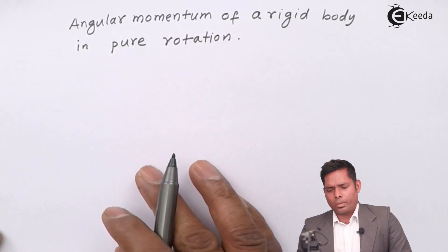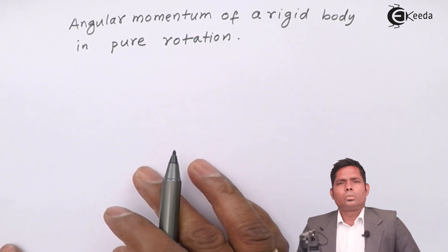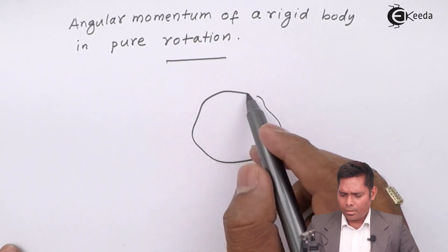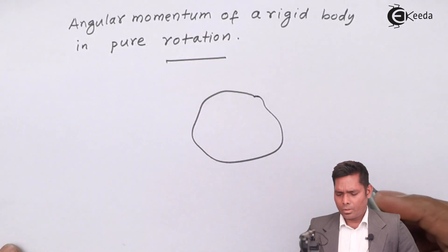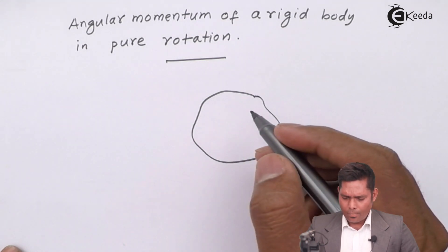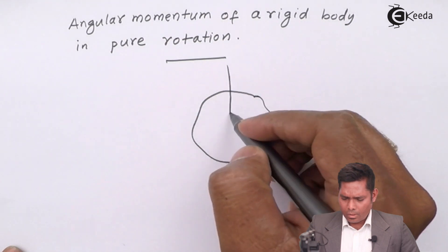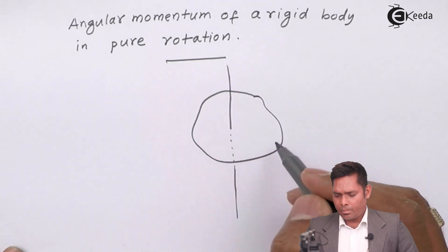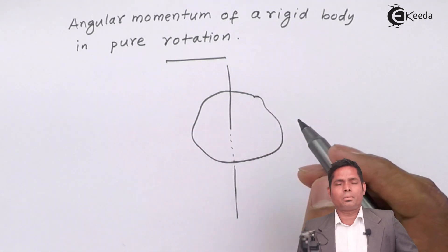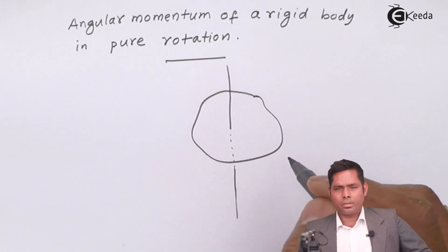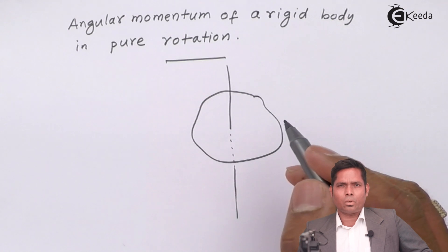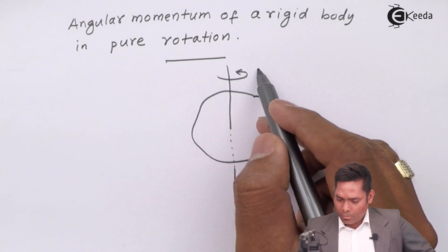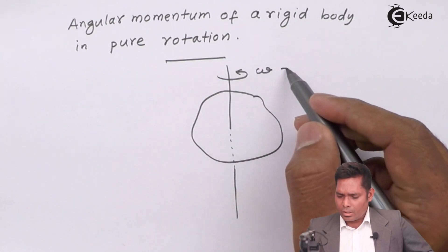That means only rotation is there, no translational motion. So let us consider any rigid body — any arbitrary rigid body — and suppose that this is the axis of rotation. It might be a three-dimensional or two-dimensional object. Suppose the object is rotating with angular velocity omega, which is constant.